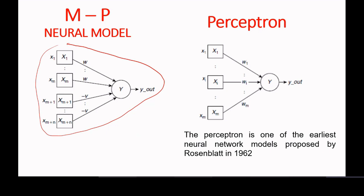One observation is no negative weights. But setting aside the weight values, what is the fundamental difference you can observe by looking at these two structures — the McCulloch-Pitts neural model and the perceptron? There is only one major difference: the inputs have different weights. That is the important difference between the McCulloch-Pitts neural model and the perceptron.